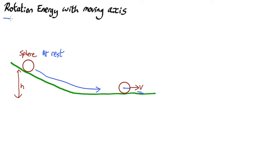If you remember, for problems like this rotation with moving axis, the way you do it is you break the energy into two parts: the motion of the center of mass, which is half mv squared, and the rotation around the center of mass, half I omega squared.